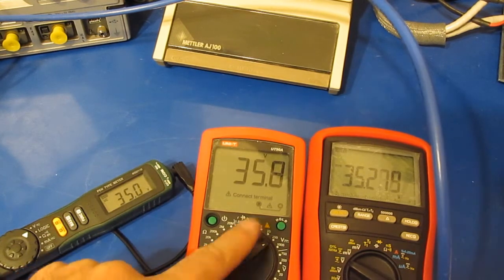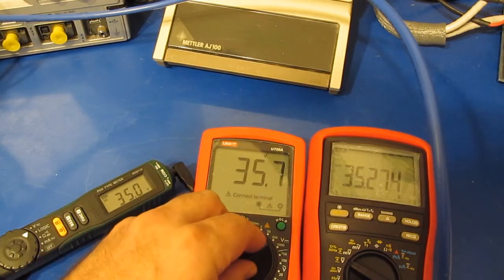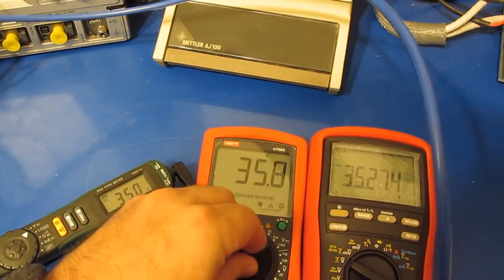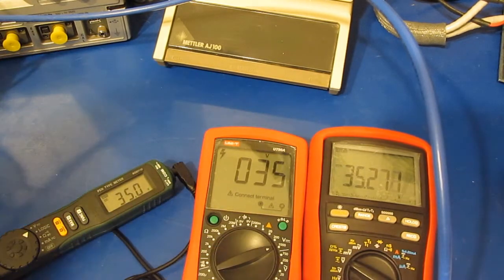So I can take this down to the 200 volt scale. You can see I'm reading roughly 35.8. Again this meter has not been aligned since the last time I damaged it. But fairly accurate.